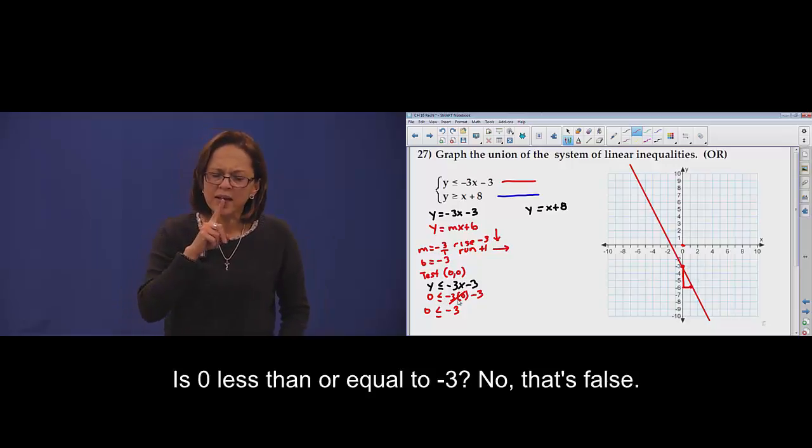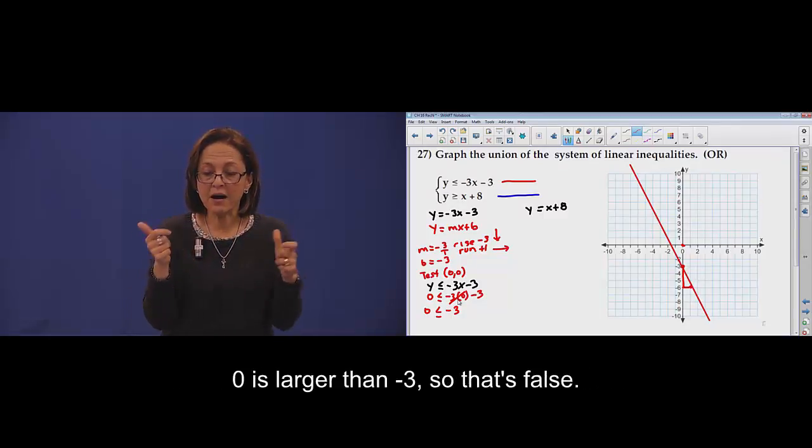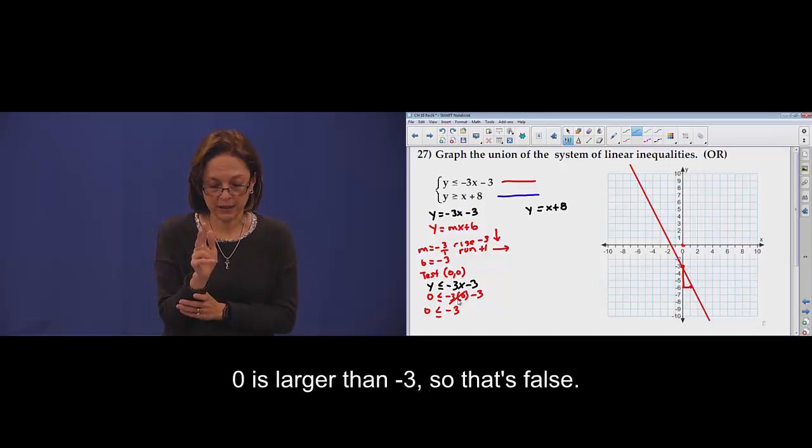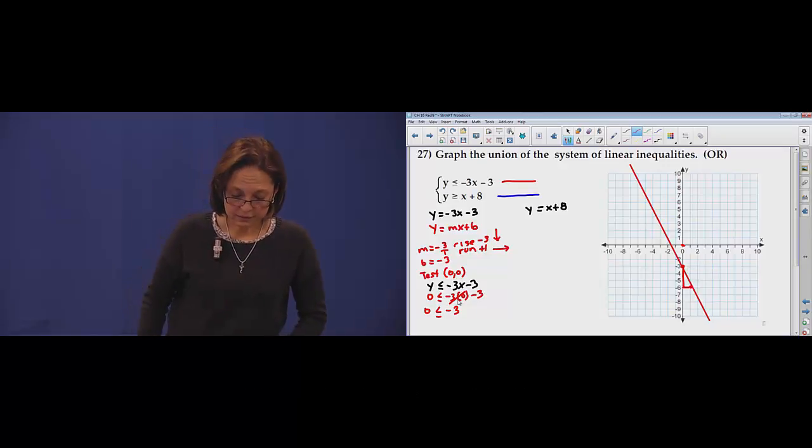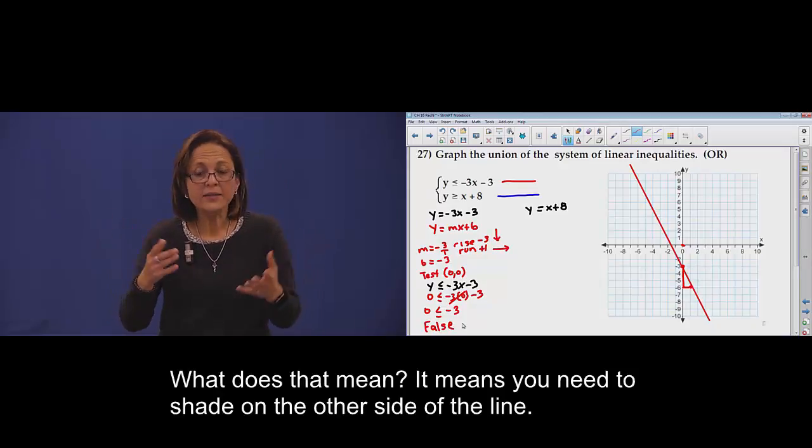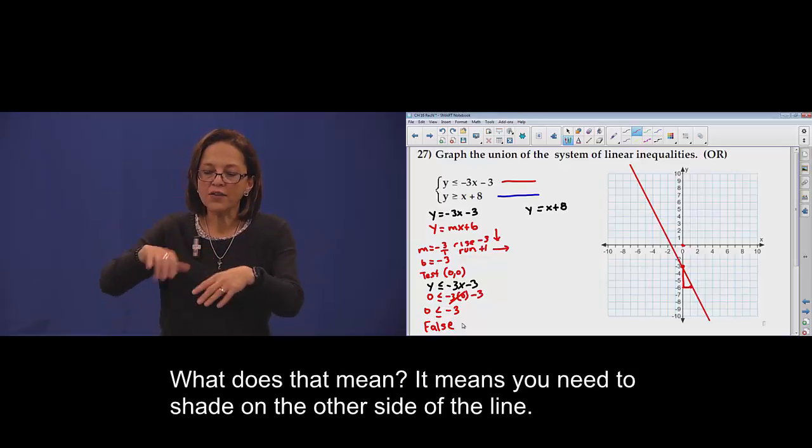Question. Is 0 less than or equal to negative 3? No, that's false. 0 is larger than negative 3. Then it's false. Means what? Shadow on the other side.